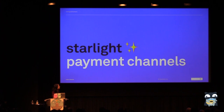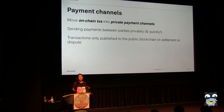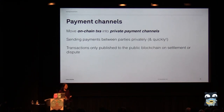So I'm going to talk about one of our projects called Starlight, which is an implementation of payment channels on the Stellar network. A payment channel is a way of moving on-chain transactions into a private payment channel. So you can imagine that if I want to send money to my friend Alice, one way is I can build a transaction, submit it to the network, wait for the entire globe to confirm it, and then I've sent the money to her.